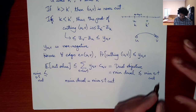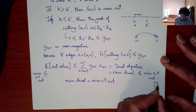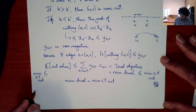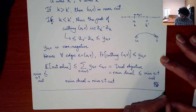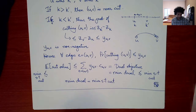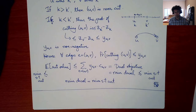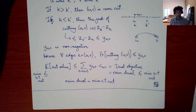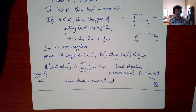Therefore the min of the dual equals the min ST cut. This proves the max flow min cut theorem. It is an absolutely beautiful proof: you take the dual optimal solution, round it appropriately, and recover the cut.